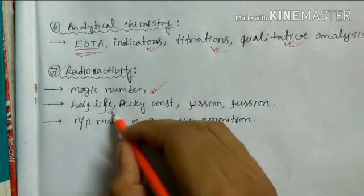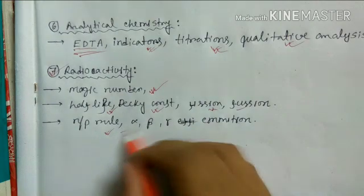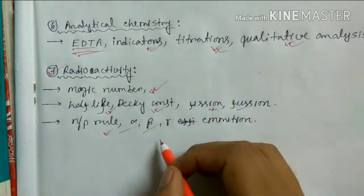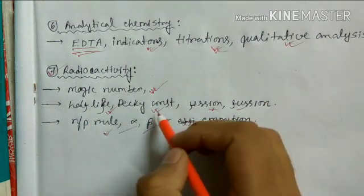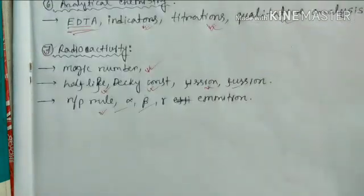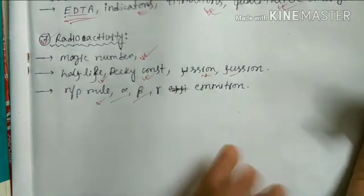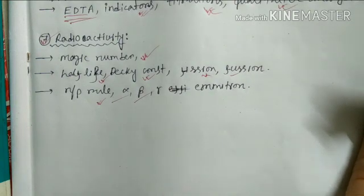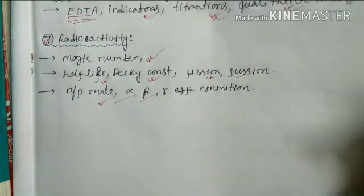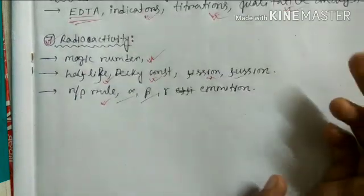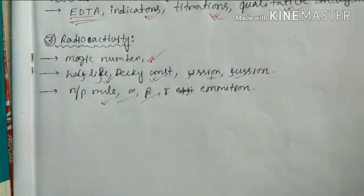The last part is radioactivity: magic numbers, half-life, decay constant, fission, fusion, and the N/Z rule — when alpha emission, beta emission, neutron emission, or positron emission will occur. Do numerical problems on half-life and decay constant. Some miscellaneous topics are also in the syllabus: dipole moment measurement and calculation, van der Waals interactions, and solubility conditions. These miscellaneous topics can be read from Huheey.